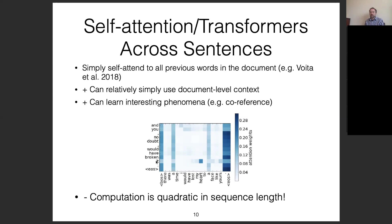However, a big problem with this method is that computation is quadratic in sequence length. If you have a really long sequence of 1000 or 2000 words, you're doing a lot of computation to incorporate all past information, some of which might not be very useful for making predictions.